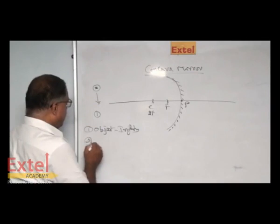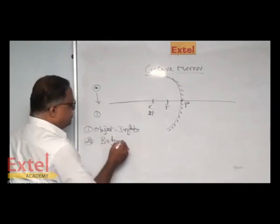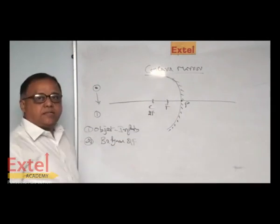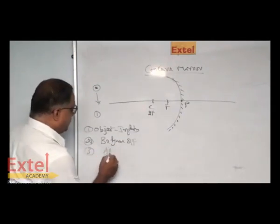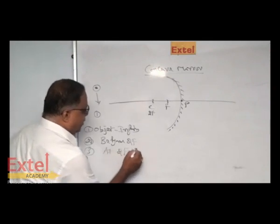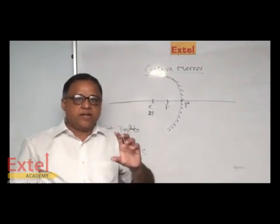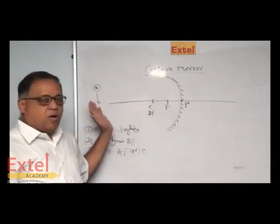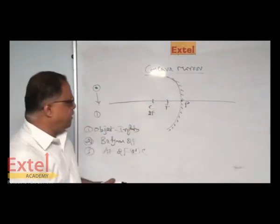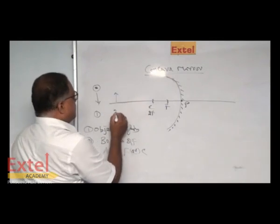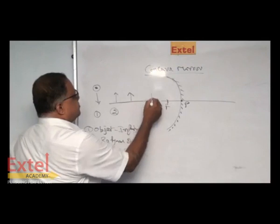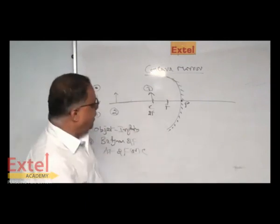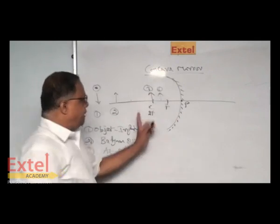Second position: beyond 2F or beyond center of curvature, we will get the image on the real inverted on the same side. So this is 2F. This is the way we are getting the object moving towards the mirror. As it is the second position, as it is the third position, we are getting the object to view the image. The object is moving towards the mirror. That is the fourth one.